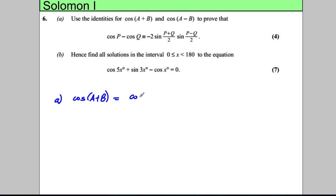That's cos A cos B subtract sin A sin B, and then cos(A-B) is cos A cos B add sin A sin B.